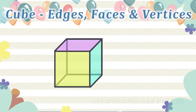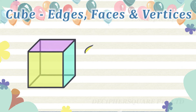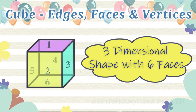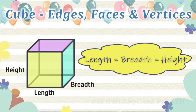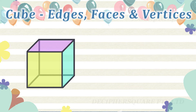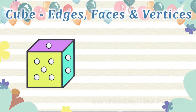What is a cube? A cube is a three-dimensional shape with six faces. All the six faces of a cube are equal-sized squares. The length, breadth and height of the cube are equal. All the faces of a cube are flat surfaces. A common example is a six-sided dice. This is an example of a cube.